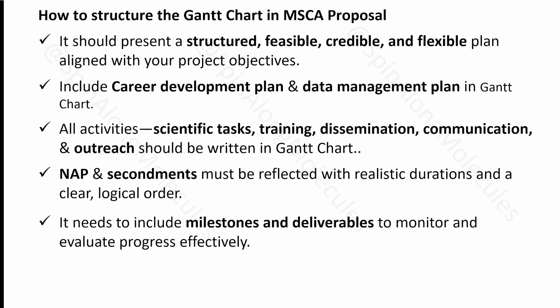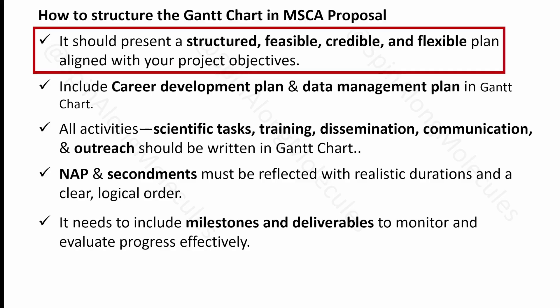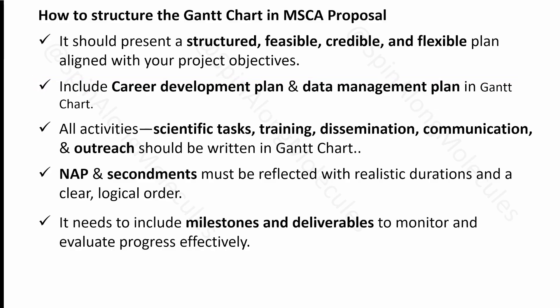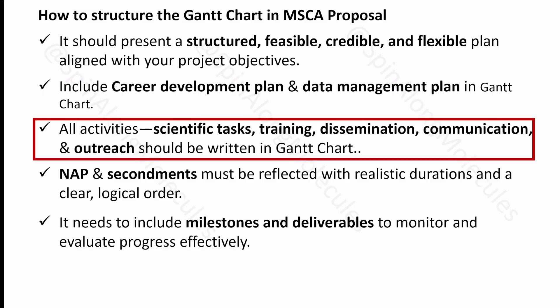How to structure the Gantt chart in an MSCA proposal: it should be structured as a feasible, credible, and flexible plan aligned to your project objectives. Also include a career development plan and data management plan in the Gantt chart. I have seen some proposals that don't include these, but the guidelines clearly state they should be there. All activities — scientific tasks, training, dissemination, communication, and outreach — should be clearly written in the Gantt chart with their start and end months.